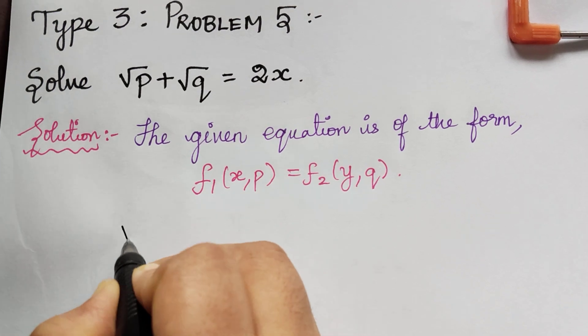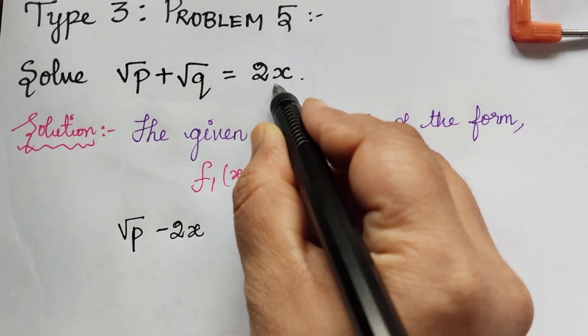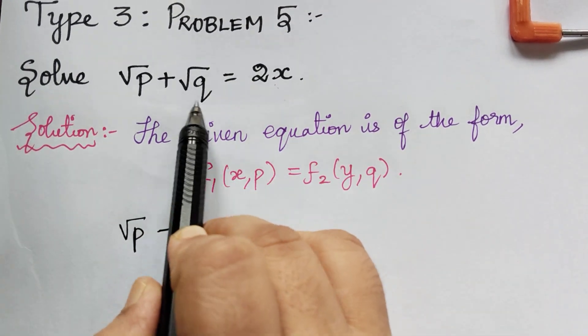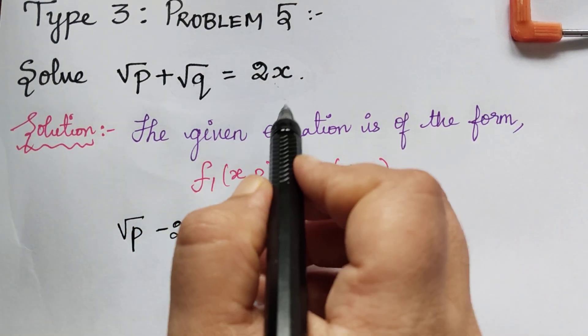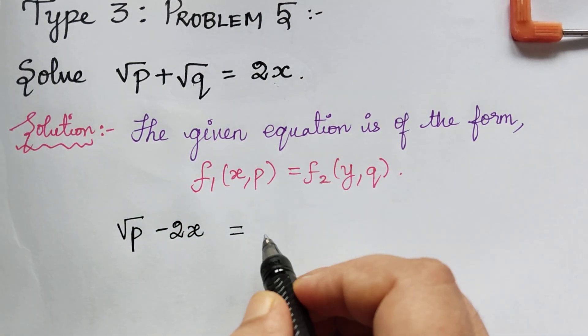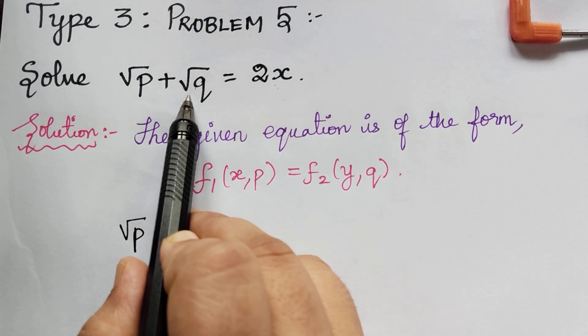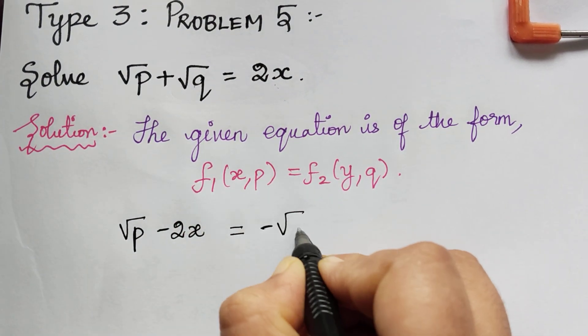So it will be √p - 2x, bringing this 2x to the left. We don't have y, so we will take q alone to the right. When taken to the right, √q becomes -√q.